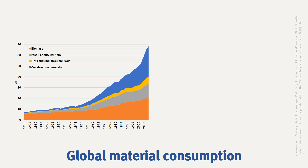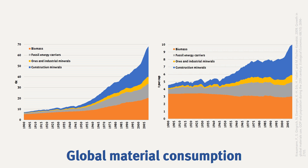Not all material types increased in the same way. Biomass in orange increased by a factor of four, whereas construction materials in blue increased by a factor of 42. In per capita terms, global material extraction went from 4.5 tons per capita at the beginning of the 20th century to around 10 tons per capita by the end — an increase of almost a factor of two, meaning we extract twice as much per person today than we did at the beginning of the century.